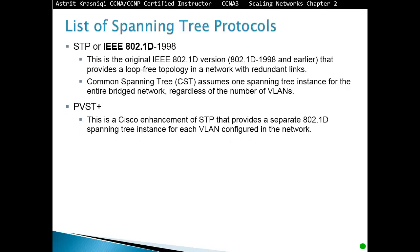Cisco said that's not very good because we can have a link that's going to be blocked all the time. So instead of that, let's have per-VLAN Spanning Tree, meaning we have a Spanning Tree for every VLAN. For example, if we have 100 VLANs, we have 100 Spanning Trees running. Cisco's original per-VLAN Spanning Tree was not compatible with Common Spanning Tree, so they came up with per-VLAN Spanning Tree Plus, which can communicate via Common Spanning Tree as well.